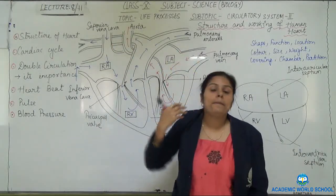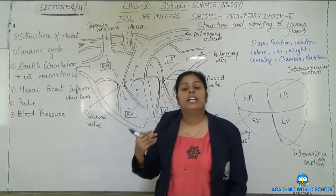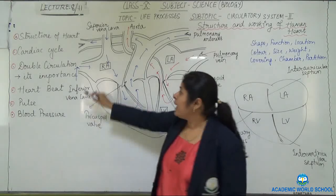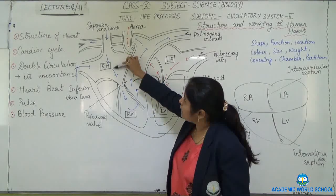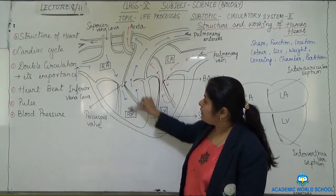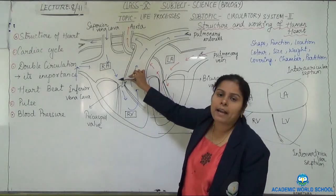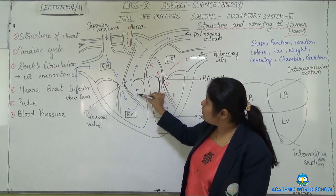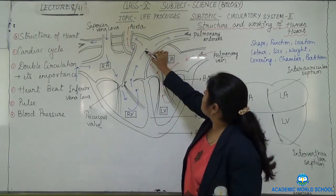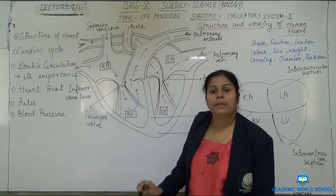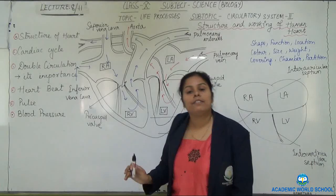The blood goes out through the aorta to different parts of the body. The deoxygenated blood from the upper portion of the body — the head and neck region — is carried by the superior vena cava. The inferior vena cava brings deoxygenated blood from the lower portion of the body. Both enter into the right auricle. From the right auricle, the deoxygenated blood moves to the right ventricle. Again there is a valve here which prevents backflow. From the right ventricle, the blood moves through the pulmonary artery to the lungs, where carbon dioxide is exchanged and given out.